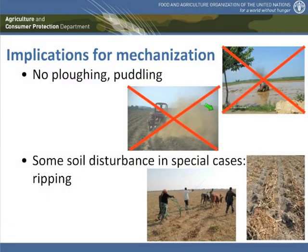In traditional agriculture, we would always first think about land preparation and tillage. In conservation agriculture, we don't do tillage — we don't do mechanical soil disturbance — and therefore things like plowing, and puddling in rice, for example, are completely out.